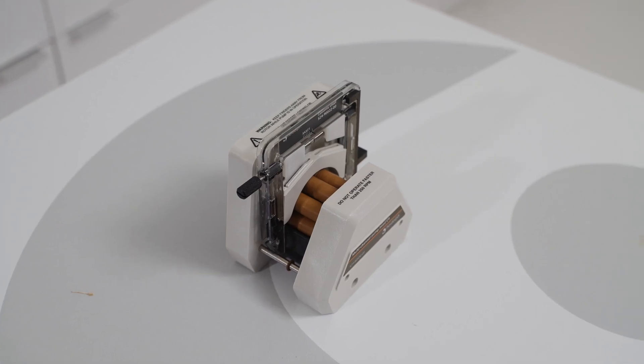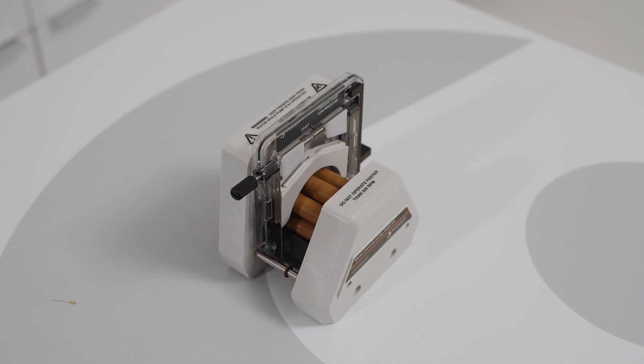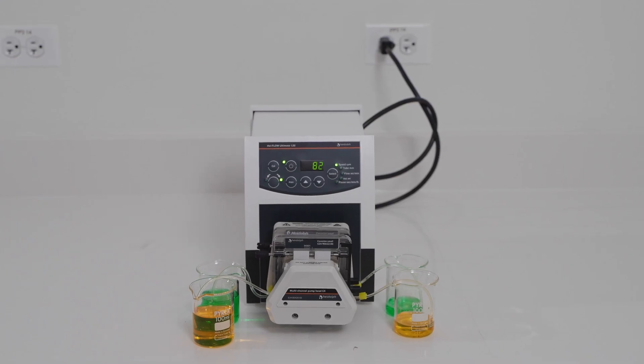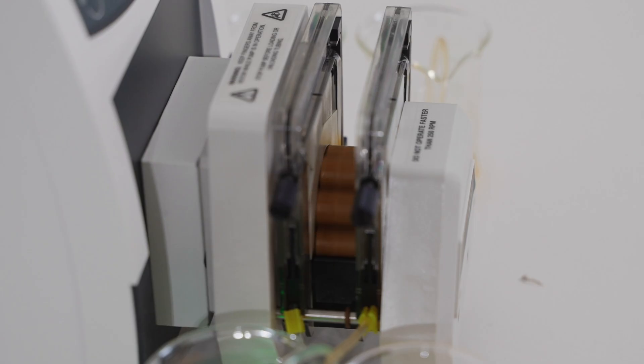The first multi-channel pump head is called the C4. The C4 is able to accept four small cassettes, meaning you could pump four different liquids at once. The C4 is constructed of an eight roller system which allows for a very even distribution of your fluid.